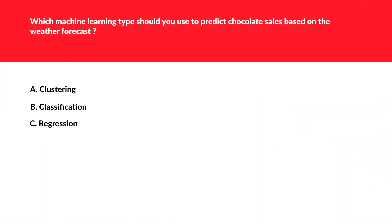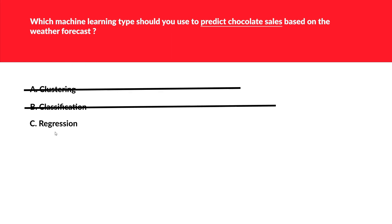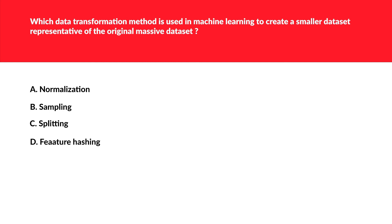By now you should have a solid understanding of clustering, classification, and regression, as I've explained them multiple times. For this question, the keyword is 'predict chocolate sales' — whenever you see the word 'predict,' regression should immediately come to mind. All other options are distractors, so regression is the correct option.